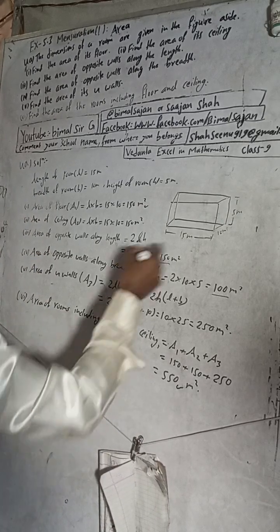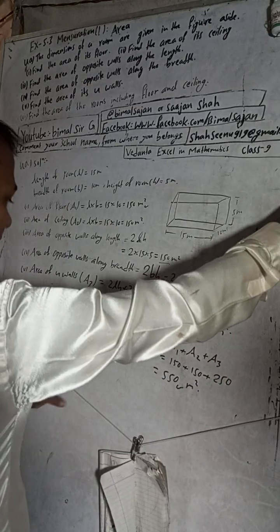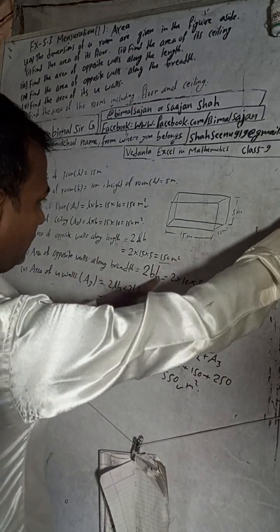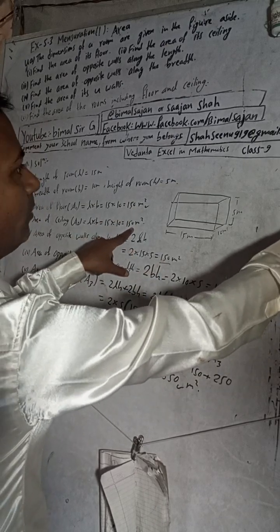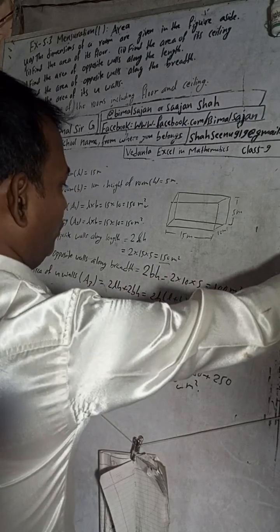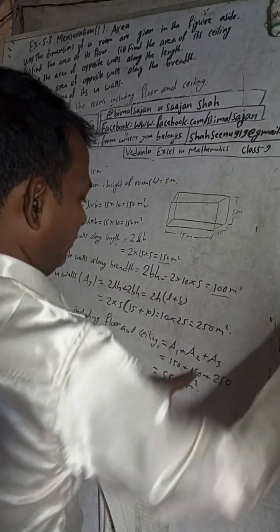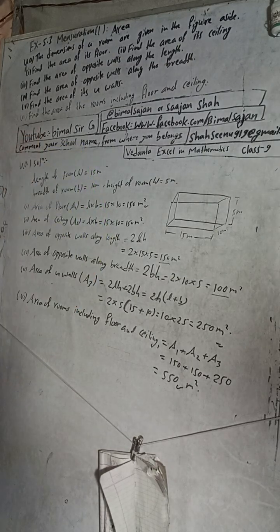The book answers are: 150, 150, 150, 100, 250, and 550 — all our answers are correct. If you find this video useful, you know what to do — share with your friends so that they can also gain knowledge.